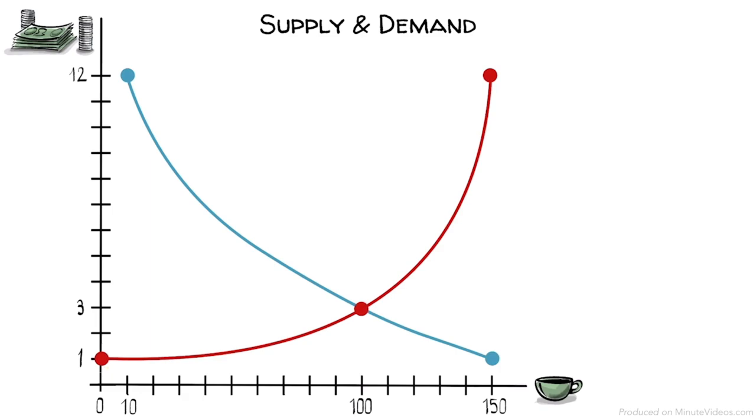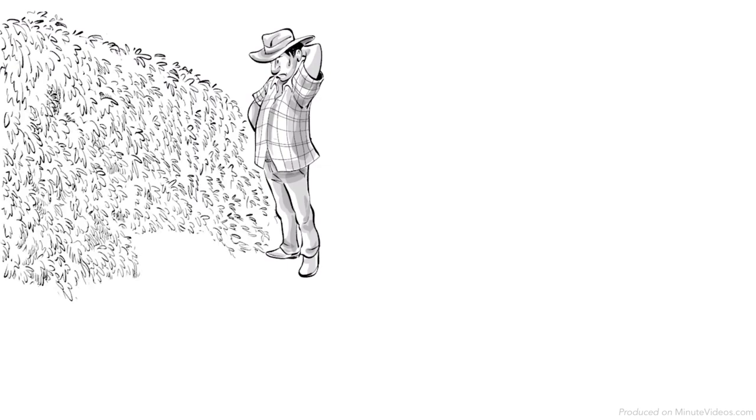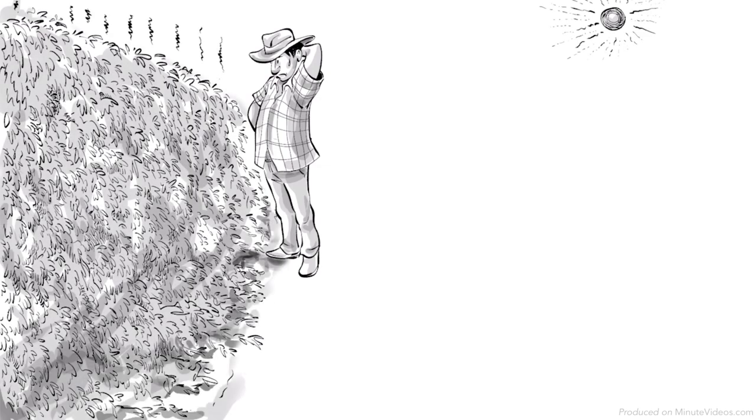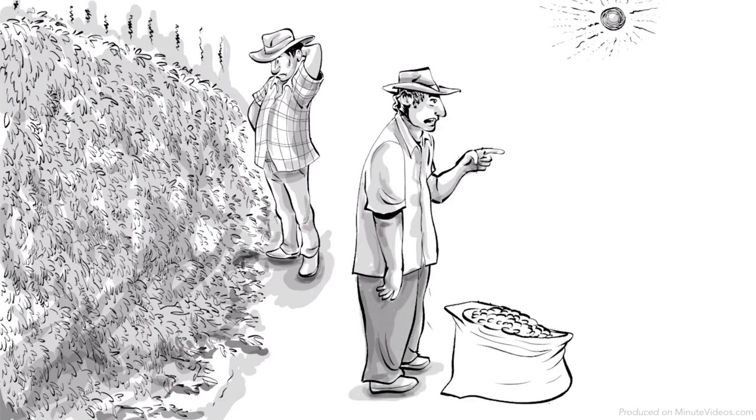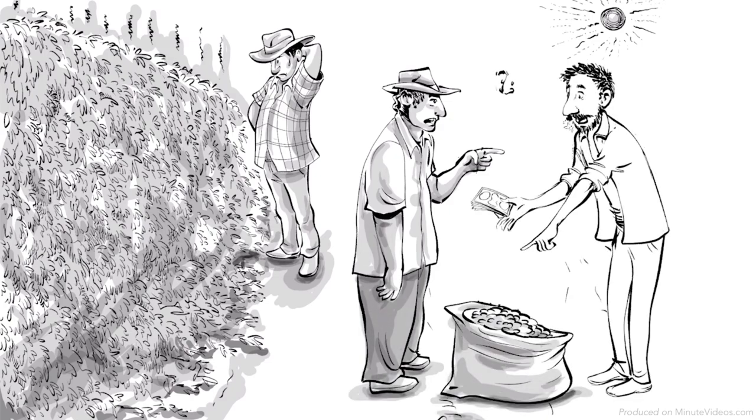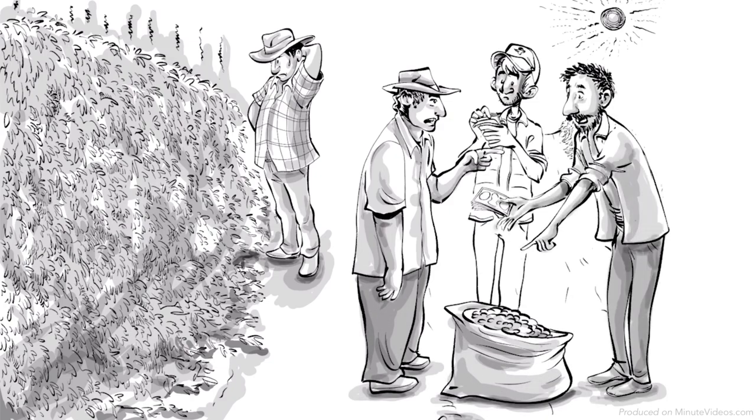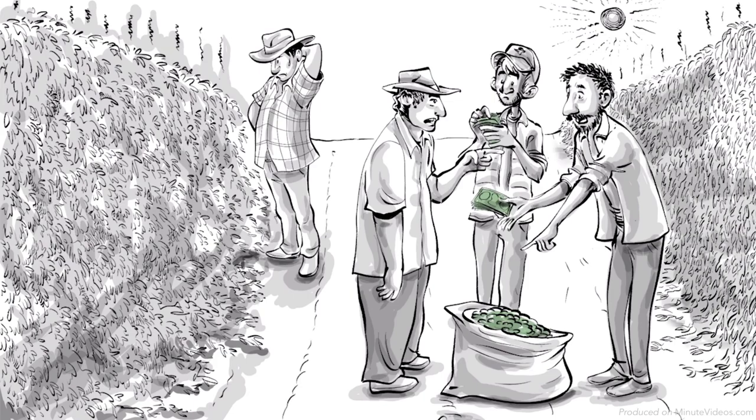Let's now assume circumstances change. The summer was very hot, and there was only a little rain which left many coffee bean crops destroyed. The poor harvest yielded a low supply of beans. As a result, more traders bid for the limited amount of beans leading to an increase in the price.